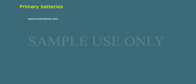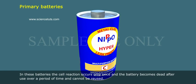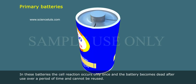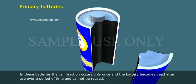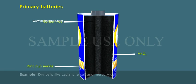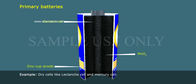Primary batteries: In these batteries, the cell reaction occurs only once and the battery becomes dead after use over a period of time and cannot be reused. Examples include dry cells like the Leclanchè cell and mercury cell.